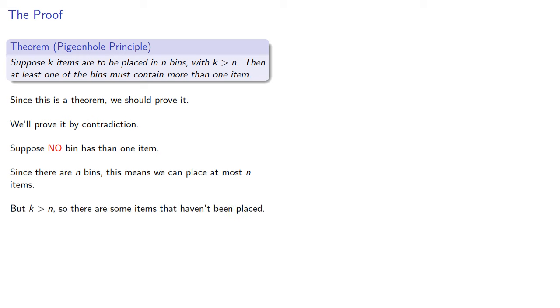But k is greater than n, so there are some items that haven't been placed. Consequently, our assumption has to be false, and there is at least one bin with more than one item.